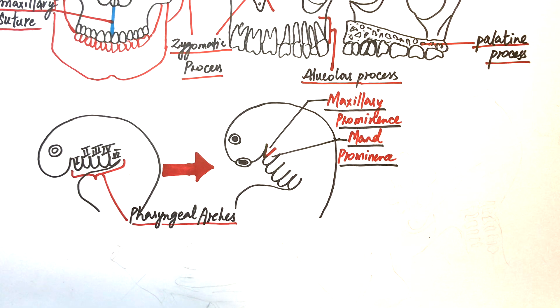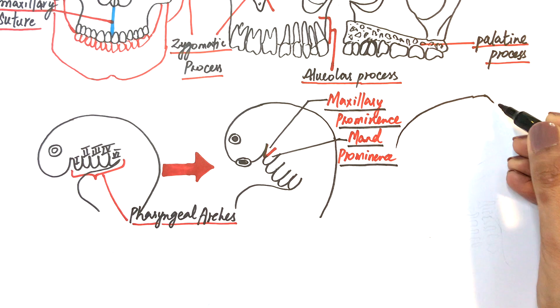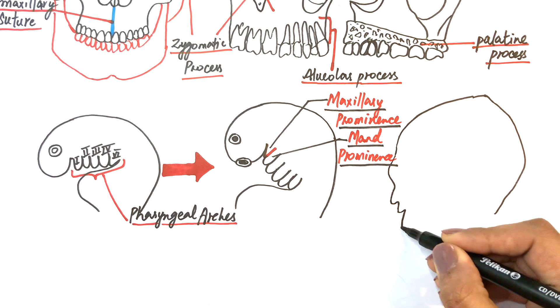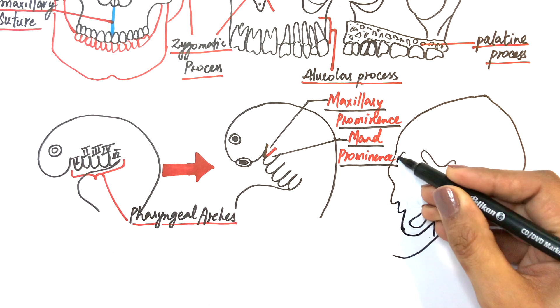Out of these five arches, the first arch named the mandibular arch soon gives off a division by the end of week four. This very first division of the mandibular arch is called the maxillary prominence. The maxillary prominence will eventually give rise to the maxillary bone through the process of intramembranous bone formation. No arch cartilage is associated with the formation of the maxillary bone.